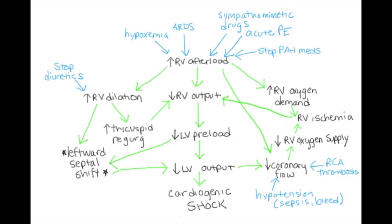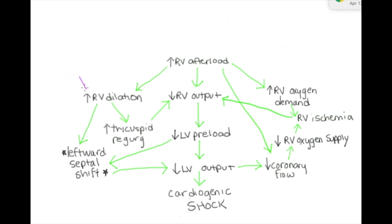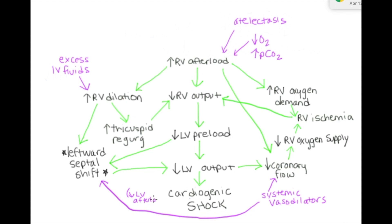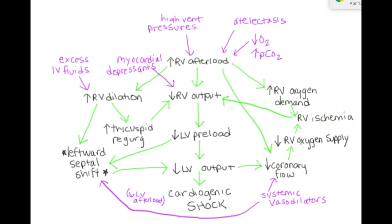Similarly, there are a number of things we might do in the ICU as part of usual care that might not be good for someone with pulmonary hypertension. Giving IV fluids is a reflex reaction to the hypotensive patient, but in these patients it will only worsen RV dilation. If the patient has a lot of atelectasis, or I allow low oxygen levels or high pCO2, I will worsen afterload. Intubating a patient with pulmonary hypertension should never be avoided if needed, but it is one of the scariest things — induction sedatives drop systemic vascular resistance, potentially causing hypotension and decreased coronary flows, and positive pressure ventilation, especially with high pressures or volumes, compresses the pulmonary vasculature and increases RV afterload further.